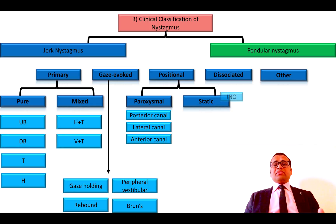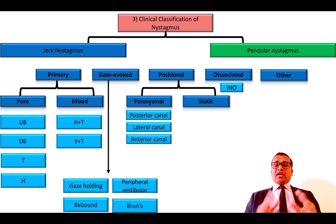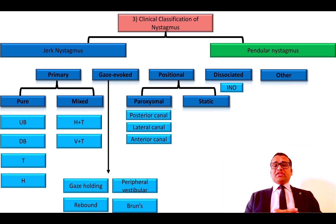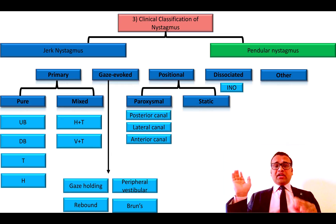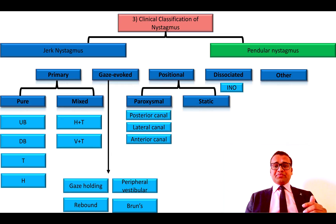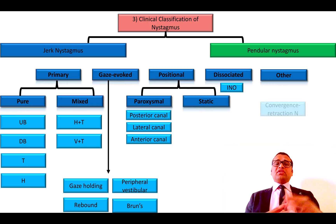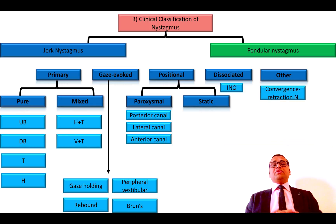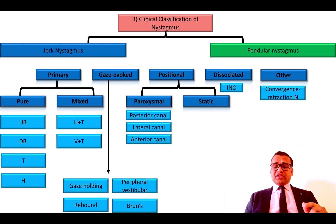The dissociated nystagmus is seen in internuclear ophthalmoplegia. As we know, in internuclear ophthalmoplegia there is nystagmus of the abducting eye and paresis of the adducting eye. Another variety of jerk nystagmus is convergence-retraction nystagmus.